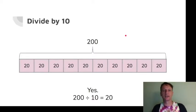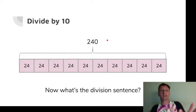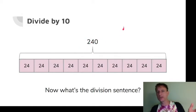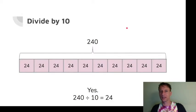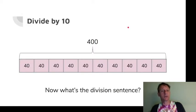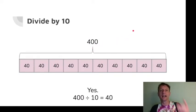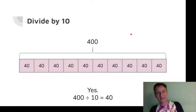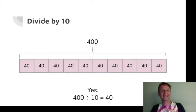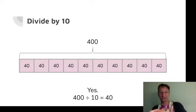So 200 divided by 10 is 20. Now here's 240 divided by 10 — every time we're dividing by 10. 240 divided by 10 is 24. And 400 divided by 10 is 40. Does this bring to mind something we did way back in Module 1? That's right — the times-10 slide going up and the divide-by-10 slide going back down. That's exactly what we're doing right here.